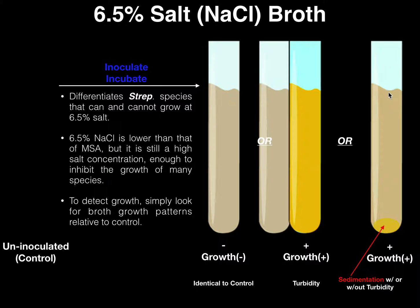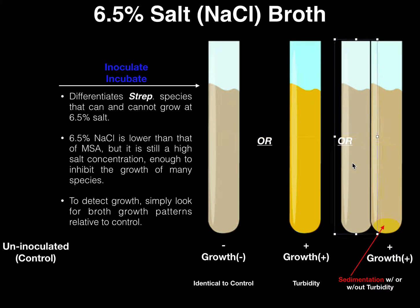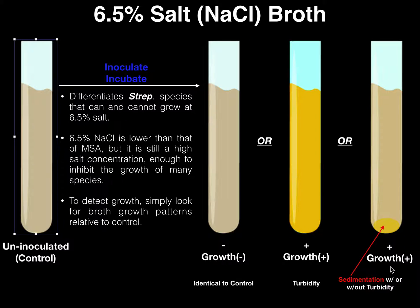In some cases, you might have turbidity and sedimentation together, which is automatically growth positive. In other cases, it may not look as turbid — it may look more or less similar to the control — but there may be sedimentation at the bottom. Even if the broth itself is identical in color and not very turbid, the fact that there is sedimentation at the bottom also means it's growth positive. Those bacteria survived the high salt concentration, so it's a growth positive result.